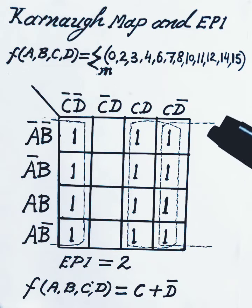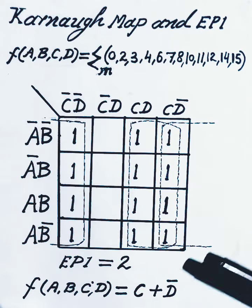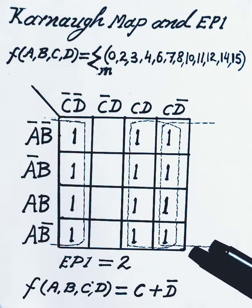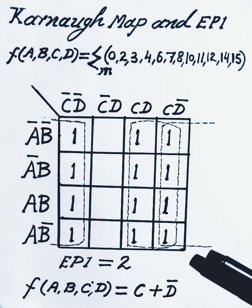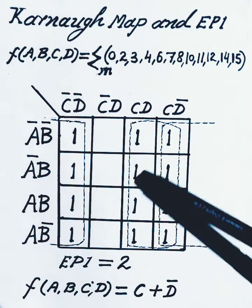Here we put the values of all these minterms in Karnaugh Map and made two groups with this eight ones.